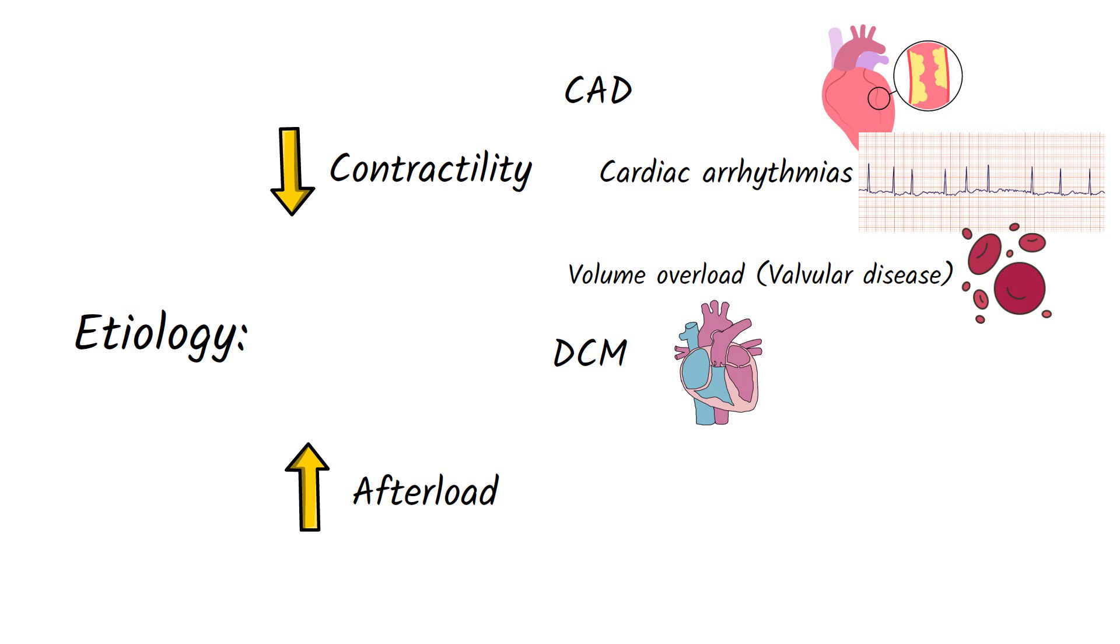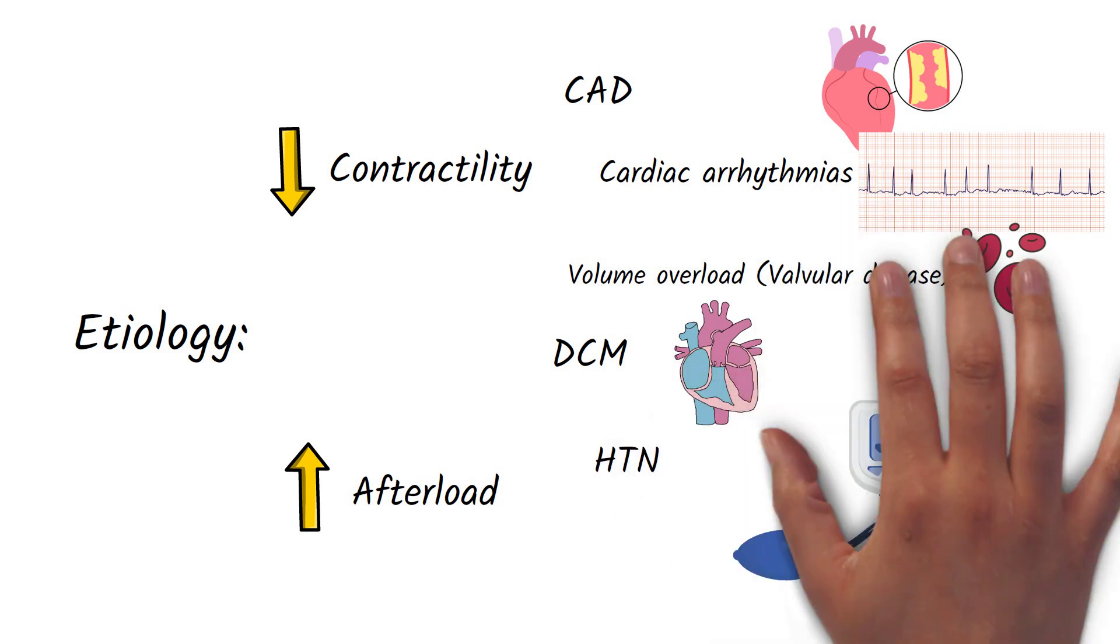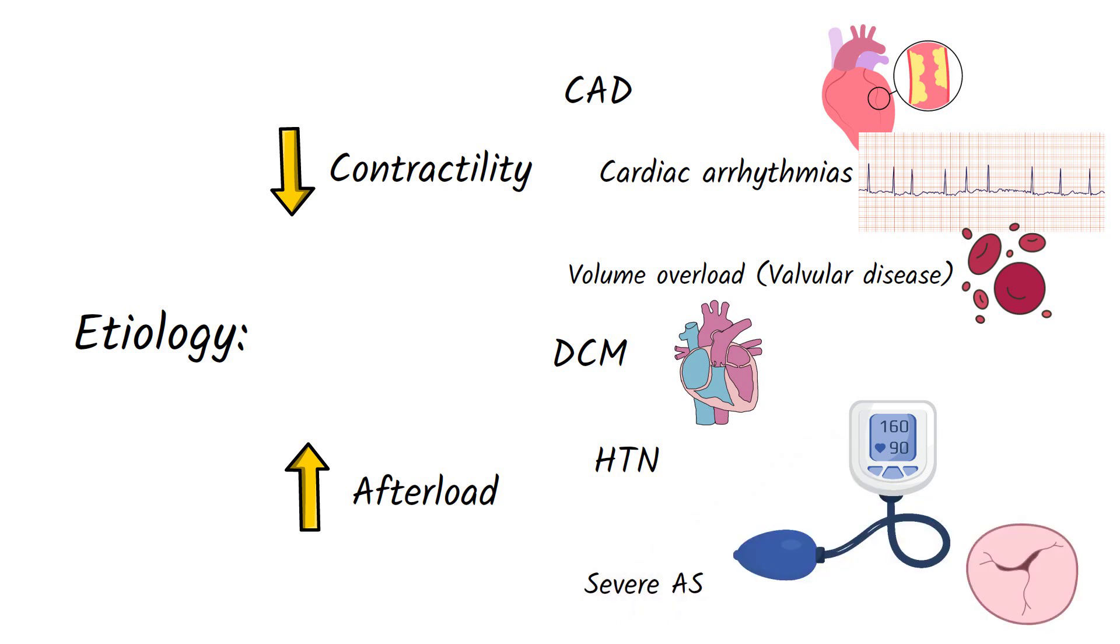Afterload is the pressure against which the left ventricle must contract to pump blood. Increased afterload can be caused by conditions such as hypertension and severe aortic stenosis. Increased afterload causes an abnormal thickening of the heart muscle, increasing the oxygen demand, ultimately leading to poorer contractile function.